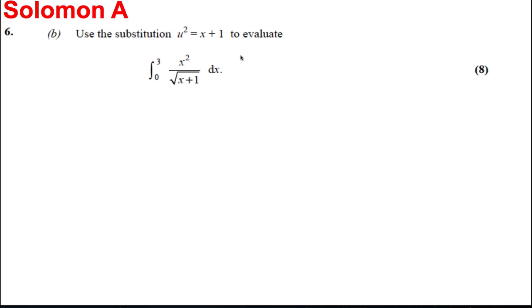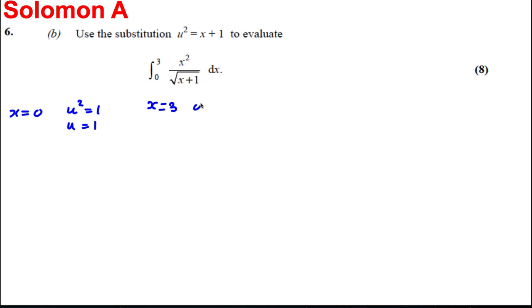Part B is a substitution question — standard, but worth 8 marks so a bit more tricky. When x = 0, u² = 1 so u = 1 (taking the positive root). When x = 3, u² = 4 so u = 2 (again taking the positive root).